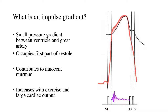This is the first heart sound and after a gap — this is the isovolumetric contraction — there is a little bit of turbulence which is contributed to by this impulse gradient, which afterwards narrows off towards the second heart sound.